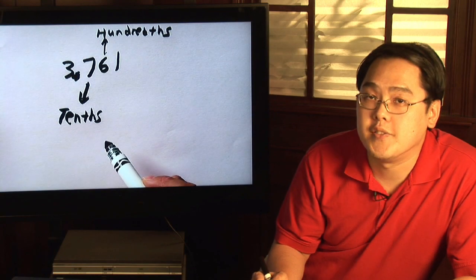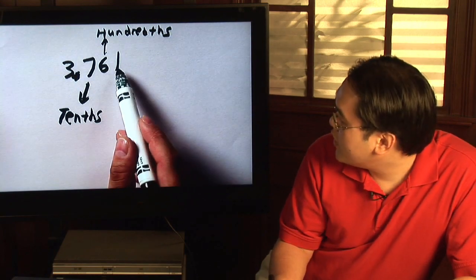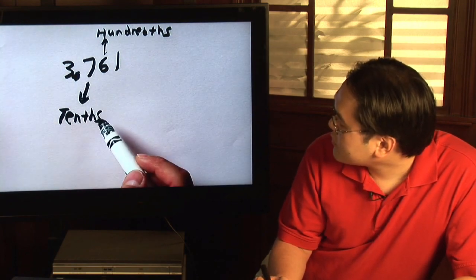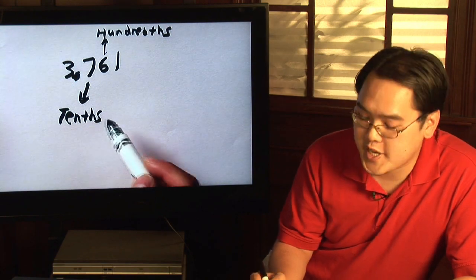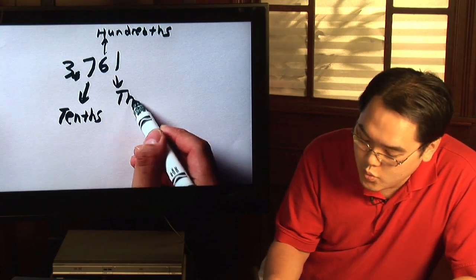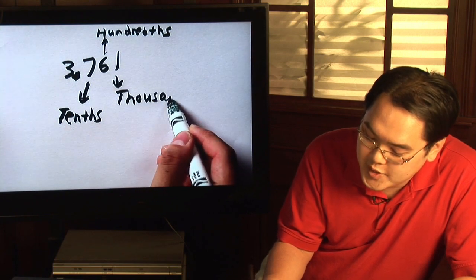But even smaller than that is one which is three places away from the decimal. This one represents the thousandths place.